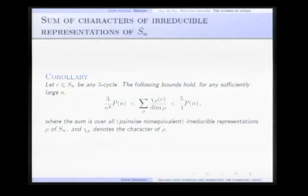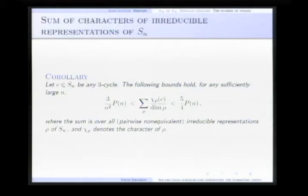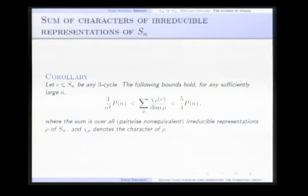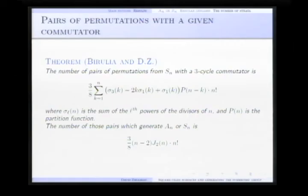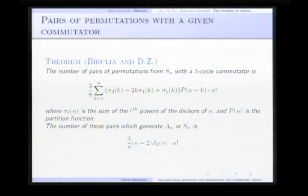Knowing these formulas, one can apply the result to estimate a weighted sum of characters of irreducible representations of Sn. As a corollary we obtained that such a sum over all irreducible representations where chi is a character and dim rho is dimension is bounded by these two expressions. This result is an example when the study of square-tiled surfaces helps understanding permutations. So both ways.